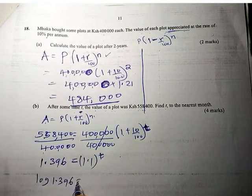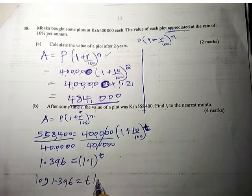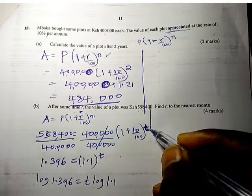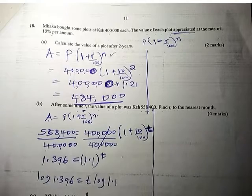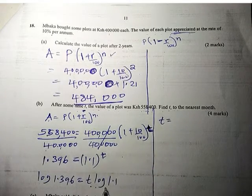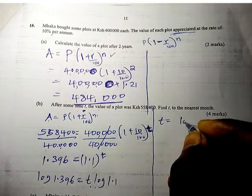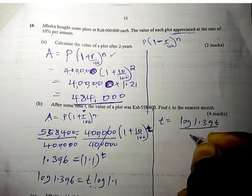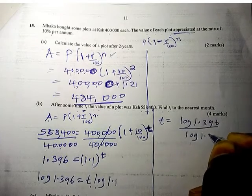Now you introduce the logs so that we have log 1.396 equals t log 1.1. To get the t, you divide by log 1.1 on both sides, so log 1.396 divided by log 1.1.